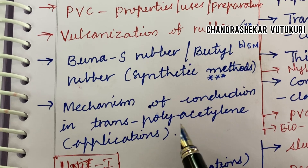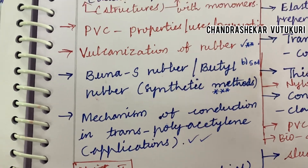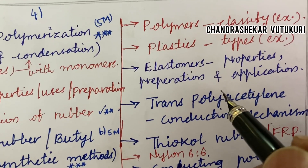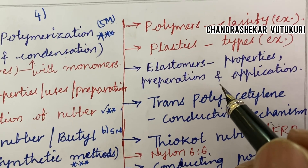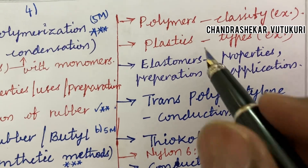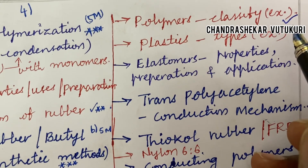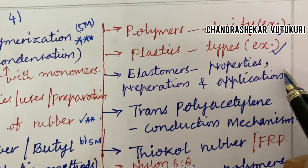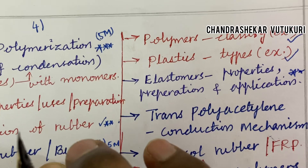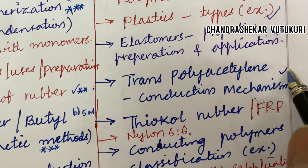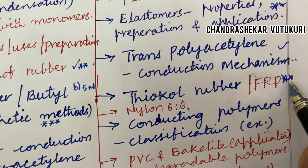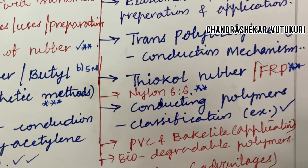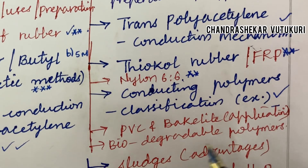The mechanism of conduction in trans-polyacetylene and its applications is also one of the important questions. Hope you are going to like my videos — if you haven't subscribed to my channel, please do it immediately and press the bell icon to receive the latest notifications. Polymers and their classification with examples may be a short question. Plastics and their types with examples are also a short question. Elastomers — properties, preparation, and applications — may be a long question. Nylon 6,6 may also be a short question.